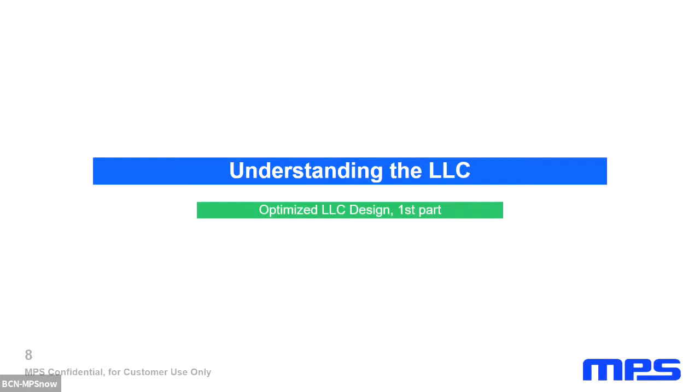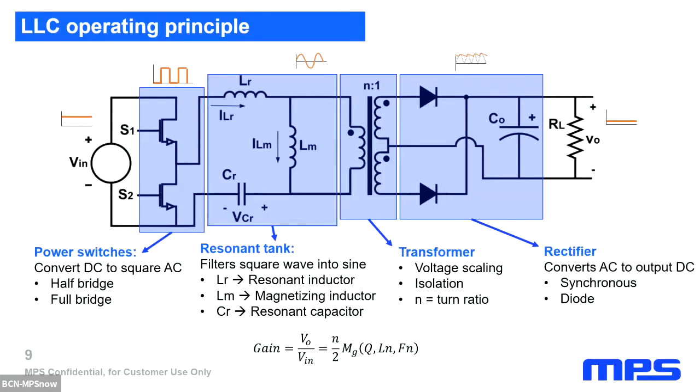Now let's move on to understanding how the LLC converter works. The LLC converter is made up of four blocks. First, there's the power switches which convert the input DC voltage into a high frequency square wave. They can be implemented either in a half bridge or full bridge topology. Then we have a resonant tank whose job is to filter the input square wave and eliminate the harmonics, outputting a sine wave of the fundamental frequency which goes into the transformer. This is responsible for scaling the voltage down to an appropriate level through the scaling ratio n and isolating the input and output. Then finally, we have the rectifier which converts the reduced sine wave back into a DC signal for the output. The total gain of this circuit is defined by the transformer and the resonant tank gain.